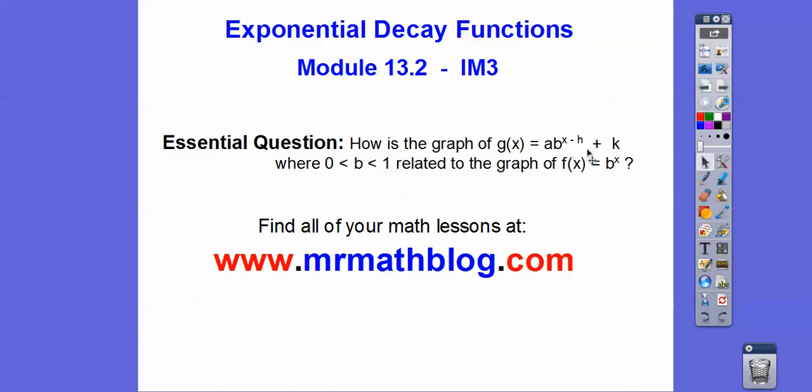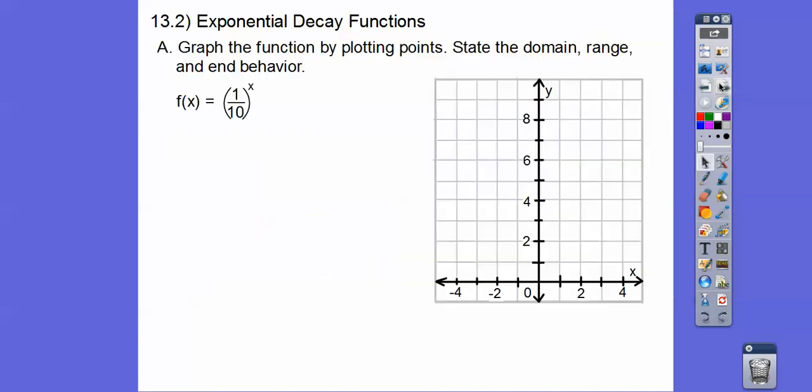So let's go ahead and graph this function. Notice here's B, A is out here, it's like an imaginary 1. This is less than 1, so we're going to graph this. We're going to do the reference points negative 1, 0, 1, and 2. So let's put negative 1 in the exponent. When you have a fraction to a negative exponent, you flip the fraction. It becomes a positive exponent, so we get 10.